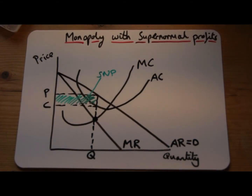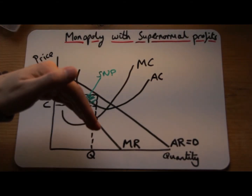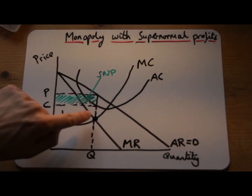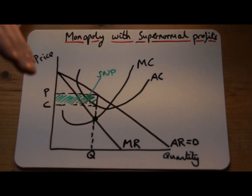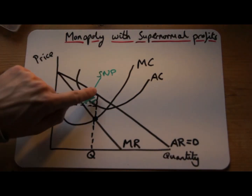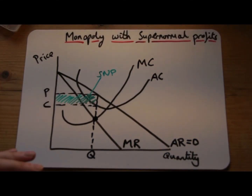Don't forget: always draw your marginal cost and marginal revenue lines first to get the profit-maximising point, then put in your average revenue line to get the price, and then put in your average cost line at the very end. Do it in that order and you won't go wrong.